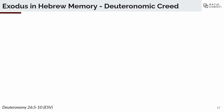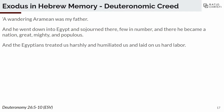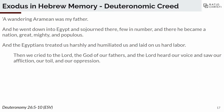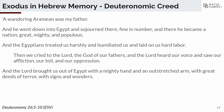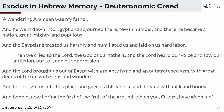The Exodus event permeates much deeper into the text than just the simple narrative. This is a creed from Deuteronomy 26, where when the Israelites are commanded to give their firstfruits to God, this is how they say their blessing: 'A wandering Aramean was my father, and he went down into Egypt and sojourned there, few in number, and there he became a nation, great, mighty, and populous. And the Egyptians treated us harshly and humiliated us and laid on us hard labor. Then we cried to the Lord, the God of our fathers, and the Lord heard our voice and saw our affliction, our toil, and our oppression.'